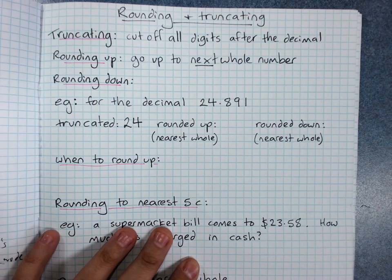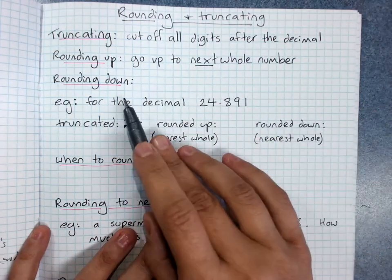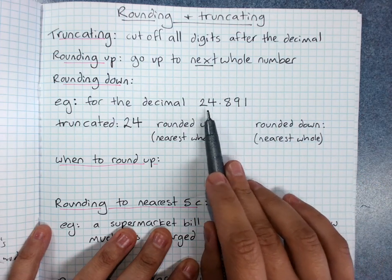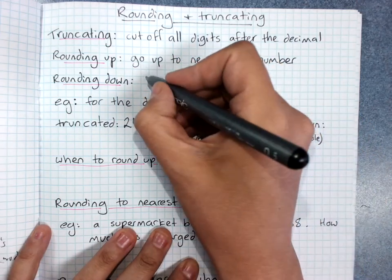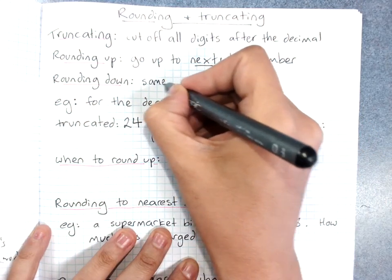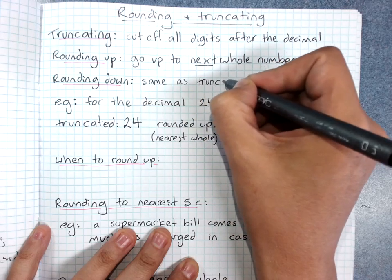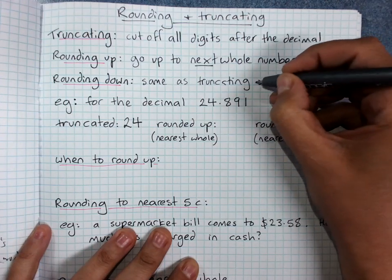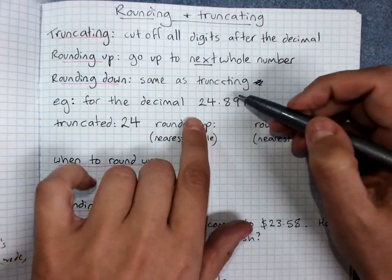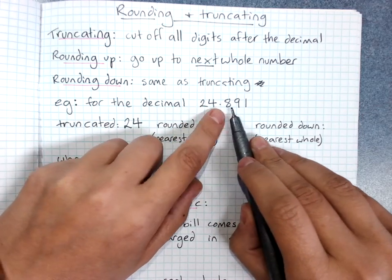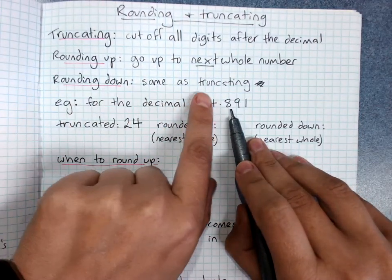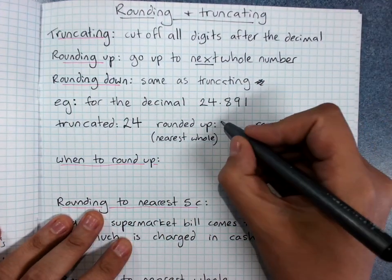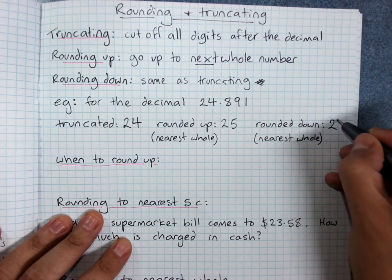Rounding down is actually just like truncating, because if we're rounding down to the nearest whole number, that's just 24. Because rounding up — we're already past 24, we've got to go to 25. But rounding down just takes us back down to 24. So rounded up this would be 25, and rounded down, 24.